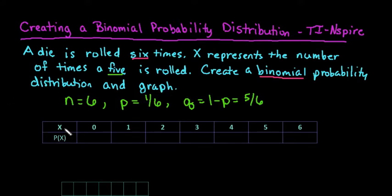I listed all of my X values here. I can either have 0, 1, 2, 3, 4, 5, or as much as 6 successes. So that means that when I roll my die, I can have 0 fives all the way up to 6 fives.